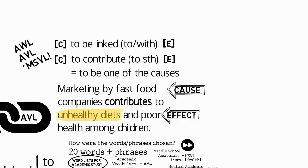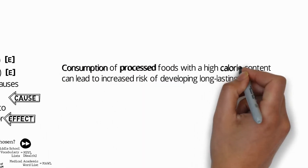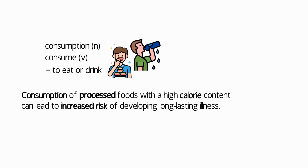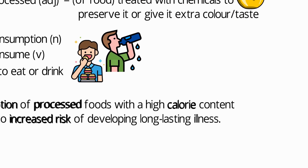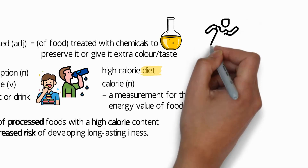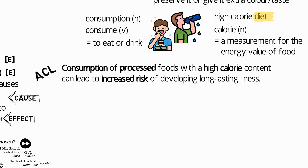Here's another context sentence: 'Consumption of processed foods with a high calorie content can lead to increased risk of developing long-lasting illness.' The word 'consumption' — the verb is 'consume' — means to eat or drink. 'Processed' as an adjective relating to food means treated with chemicals to preserve it or give it extra color or taste. 'Calorie' is a measurement for the energy value of food. A good collocation is 'high calorie diet.' 'Increased risk' is an adjective and noun collocation from the ACL.